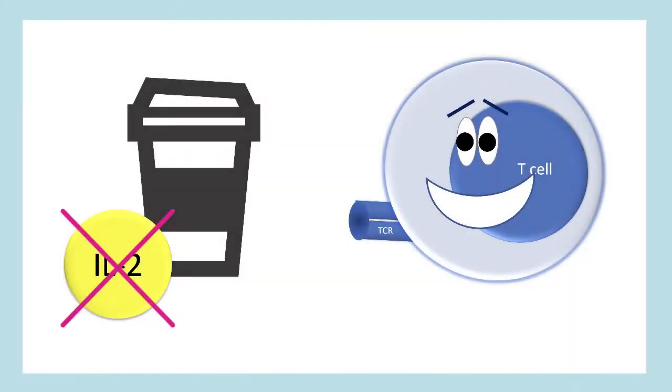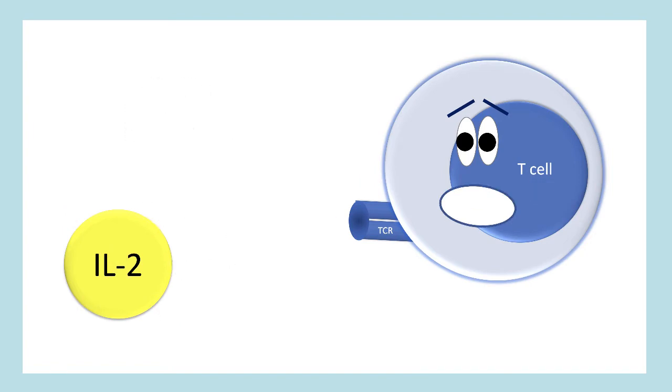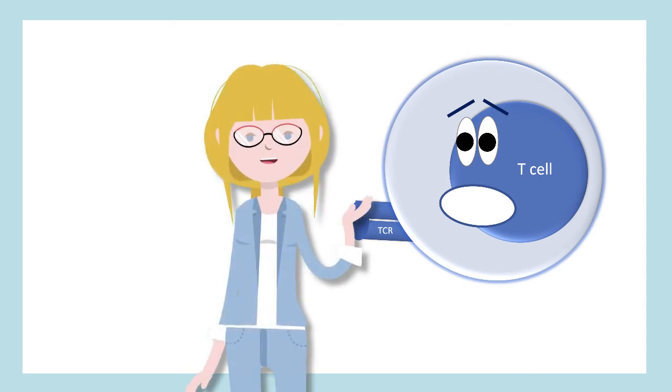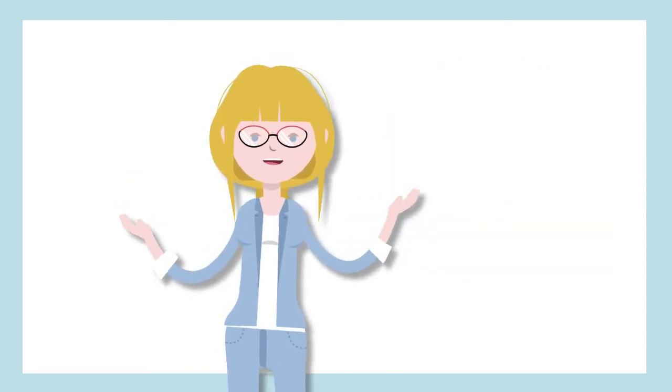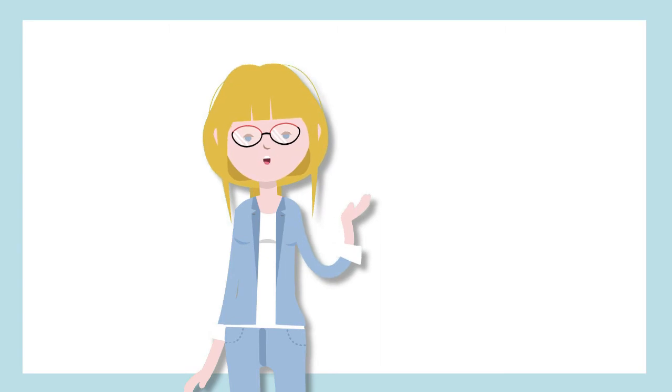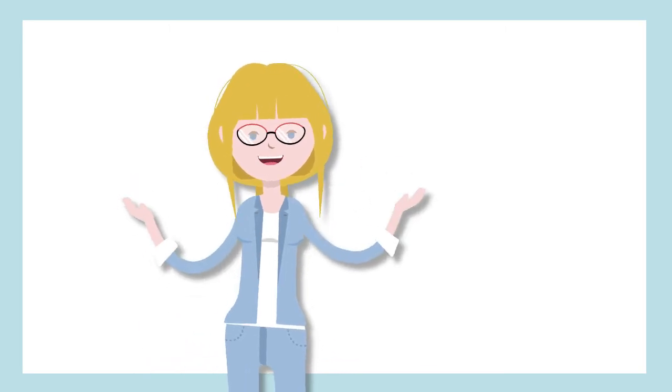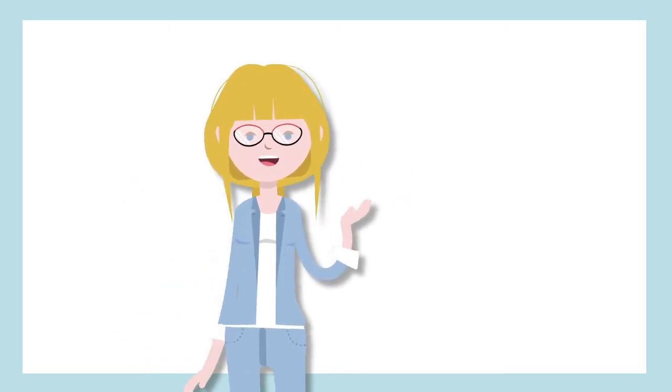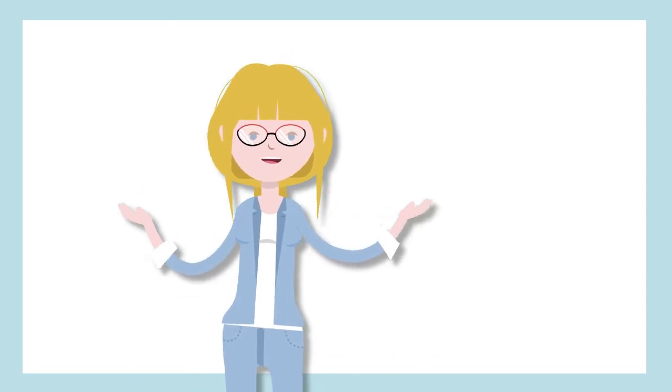So if you block interleukin-2, you're going to be depriving the T-cells of their activation fuel. You are going to take away their coffee. And taking away T-cell coffee is an excellent way to suppress someone's immune system. So that's the overall effect of these drugs. But I still haven't told you exactly how they do this. Let's unpack that now.